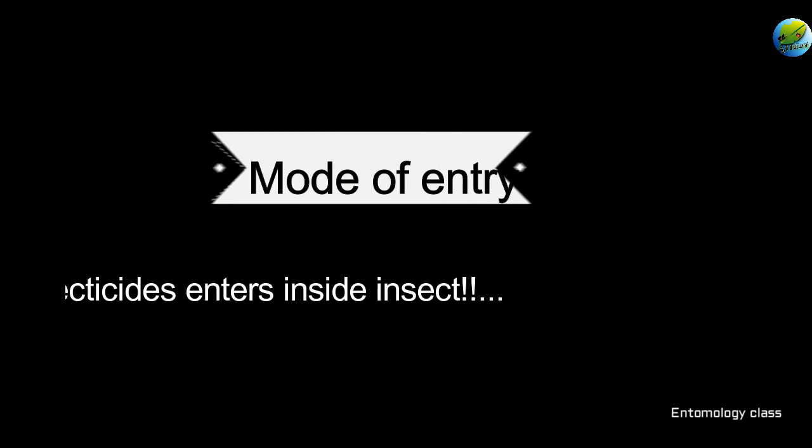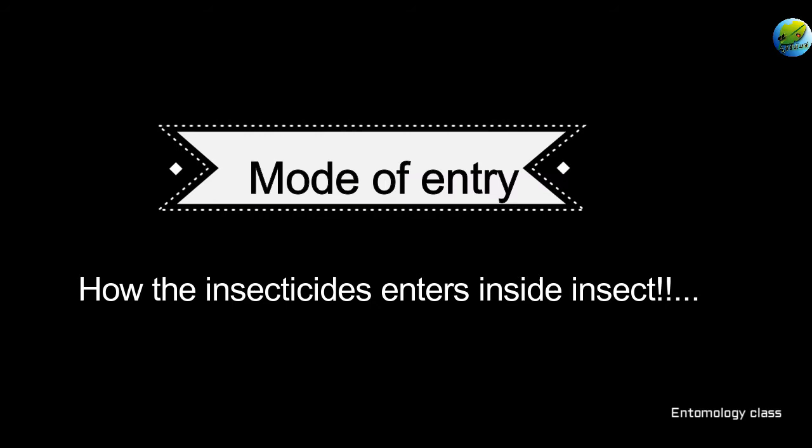When we are talking about insecticides, we need to be clear about two things. First one is mode of entry and the next one is mode of action. Mode of entry means how the insecticide enters inside the system of insects. Based on how the insecticide enters inside the system of insects, there are two kinds of insecticides.